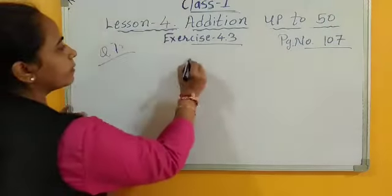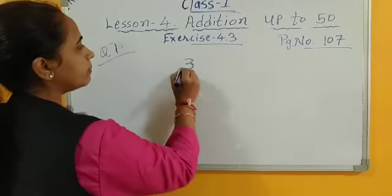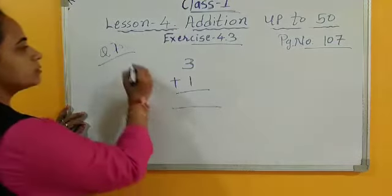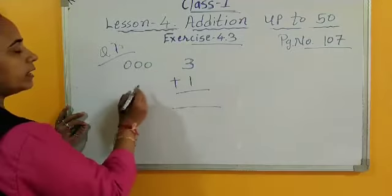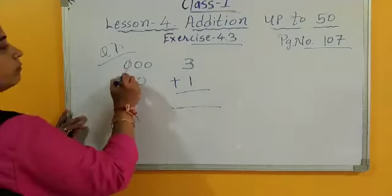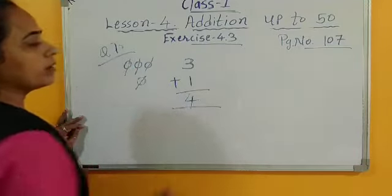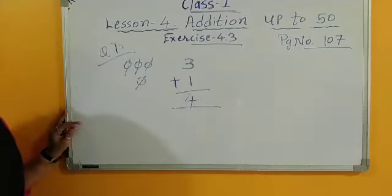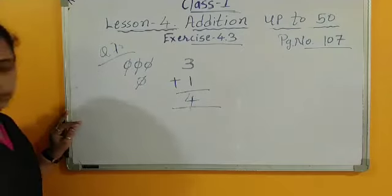In this next, 3 plus 1. So 1, 2, 3 and here 1. So now, 1, 2, 3, 4. Count the total, so 4.